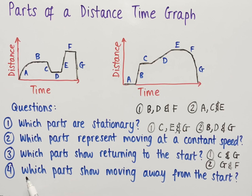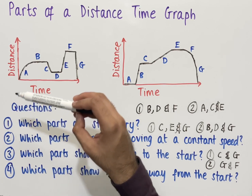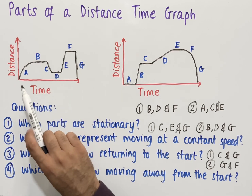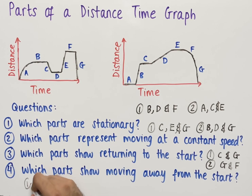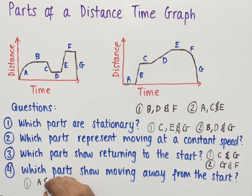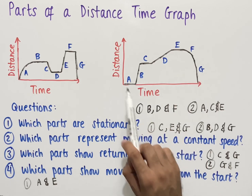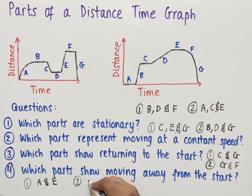The fourth and final question asks which parts show moving away from the start. Movement away from the start means the line or curve is going away from the x-axis. In the first graph, part a and part e are both moving away from the x-axis — so the answers are a and e. In the second graph, part b and part d are the only parts where the graph is moving away from the x-axis — so the answers are b and d.